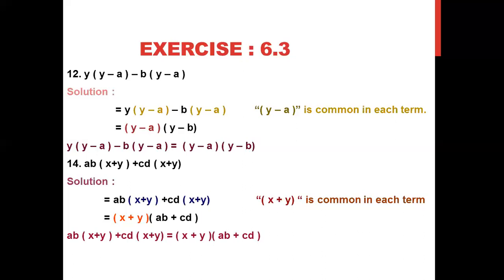Question 14 — a very easy one. In this question, (x + y) is already common. We make partners, take (x + y) common from both terms, and ab + cd is left. Answer: (x + y)(ab + cd). Just one step — take (x + y) common from both terms. How easy this question is!